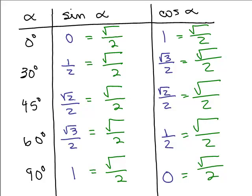Here's what you have to remember. If you're doing it for sine, you start with 0 and just count up. Watch what goes under the square root: 0, 1, 2, 3, 4. If you simplify each of these, the square root of 0 over 2 is 0; square root of 1 over 2 gives you one-half; square root of 2 over 2 is already simplified; square root of 3 over 2; and square root of 4 over 2 — since the square root of 4 is 2 — equals 1. So this pattern gives you all those values.